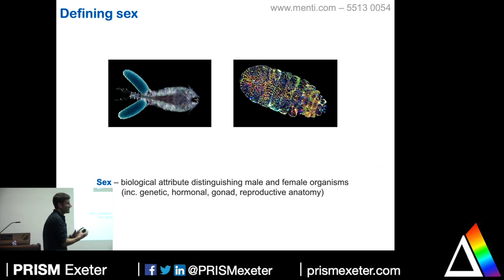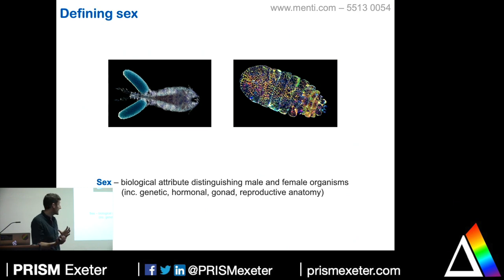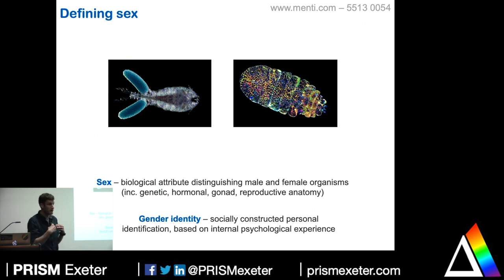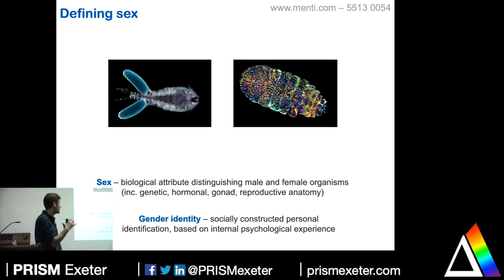What we're talking about in the focus of this lecture is sex — the biological attribute distinguishing between male and female organisms — which can include genetic, hormonal, gonad, and reproductive anatomy. It's important to point out this is different to gender identity, which is a socially constructed personal identification based on an individual's association with society. That's a really important trait in humans, but we cannot assess it in animals. So in biosciences, outside of the human species, it's always sex that we're referring to, not gender.